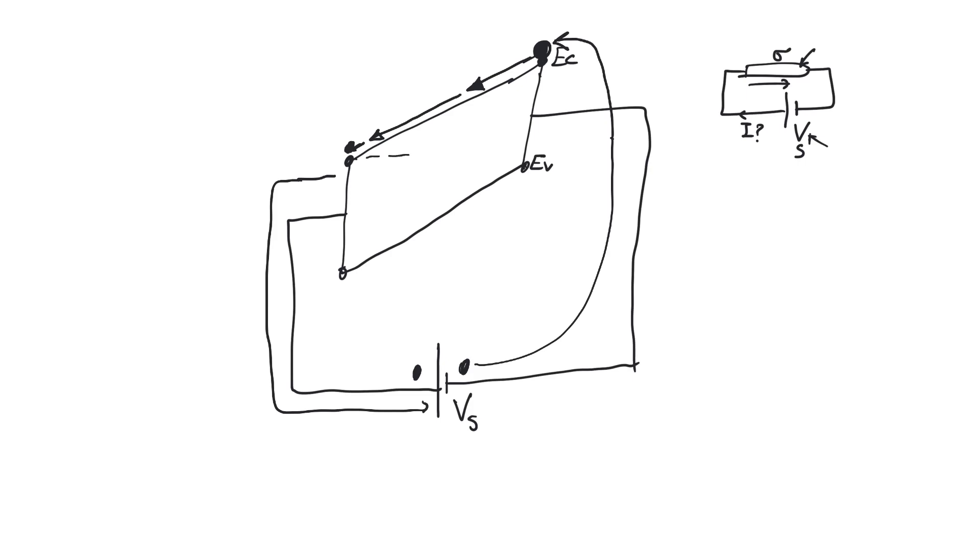Now by how much is the conduction band edge higher on this side than it is on the other side? There's a very specific value for this. This is higher by QVS electron volt in terms of energy. So a voltage source of Vs will allow electrons to gain QVS electron volt. This is the definition of voltage. Voltage is by how much the battery can raise the energy of a charge of one coulomb as it crosses it. And this is exactly what's happening here.